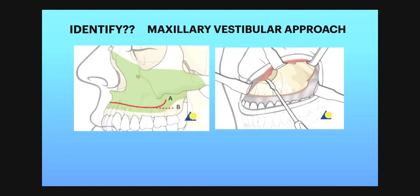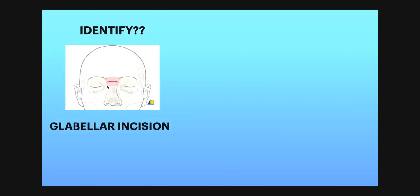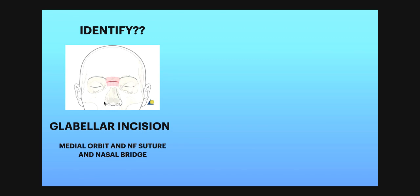This is a maxillary vestibular incision. In case of mid-face fracture when there is a LeFort 1 fracture and the buttress needs to be assessed, this incision is used. This is a glabellar incision, which is given when you need to see the medial orbit, nasofrontal suture, and nasal bridge. In case of LeFort 2 or LeFort 3 fracture, this incision can be placed to approach the nasofrontal area or nasal bridge.